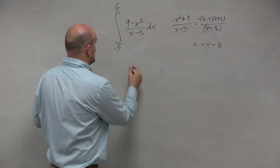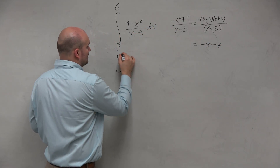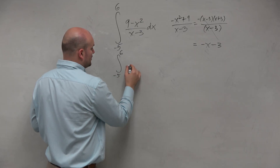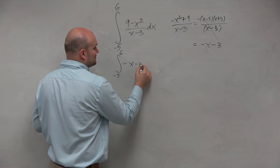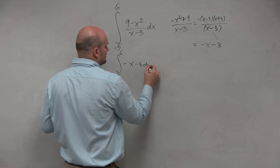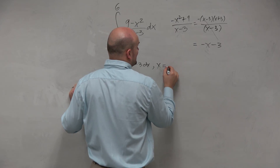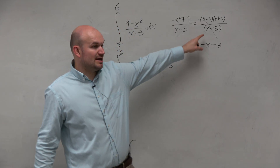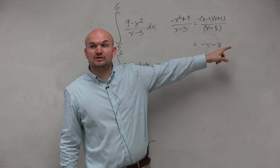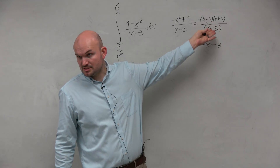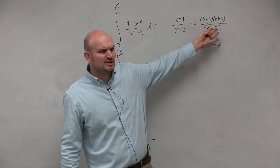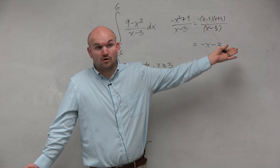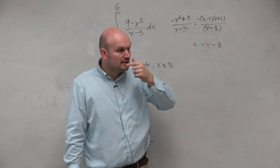So therefore I could rewrite this integral as 6 to negative 5 of negative x minus 3 dx. Remember, x cannot equal 3 because that is one of my initial original conditions. If you think about that, it's an original condition — that's because that is a hole, right?